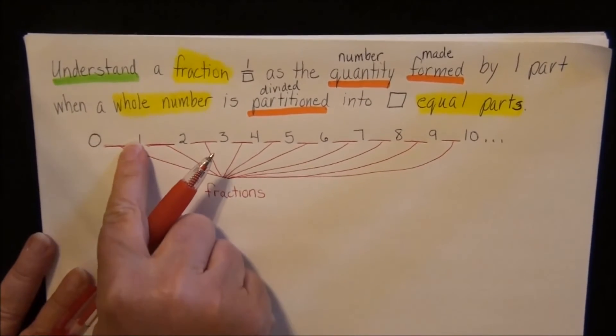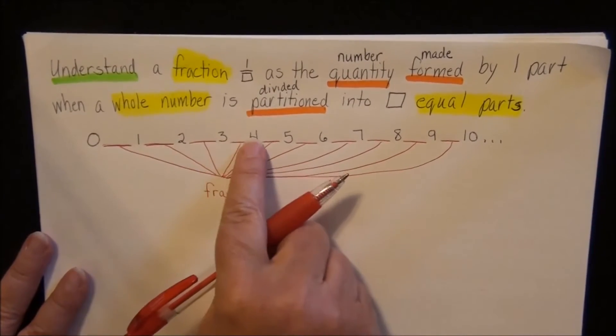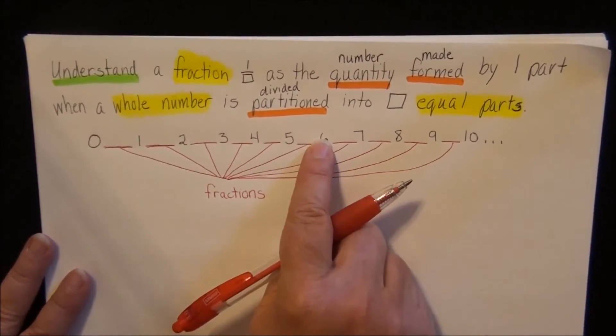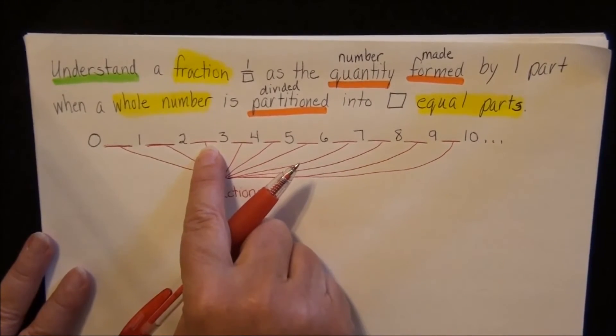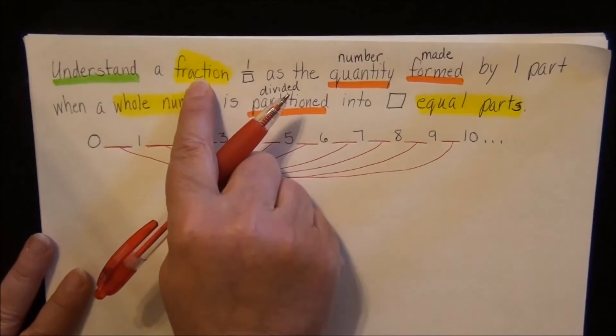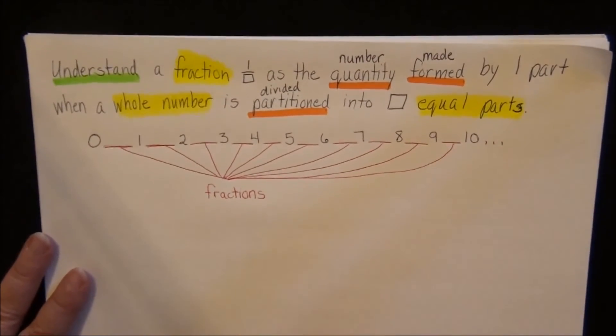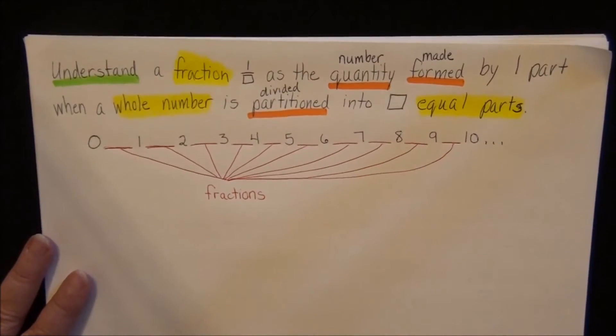So we have our whole numbers, those are the numbers you learn to count your Cheerios with. And then in between each of those numbers, you have fractions. So we've talked about whole numbers and fractions. In just a moment, we're going to talk about equal parts.